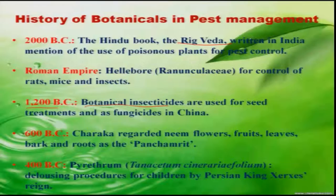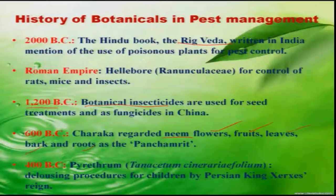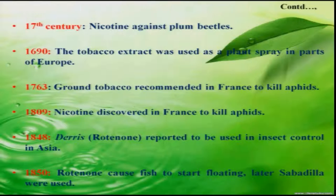In India, our own domestic plant — neem — with different parts including flowers, fruits, leaves, bark, and roots, is regarded as Panchamruta by Charakarushi. Similarly, these botanicals were used extensively during the 1700s and 1800s, before the invention of synthetic insecticides.